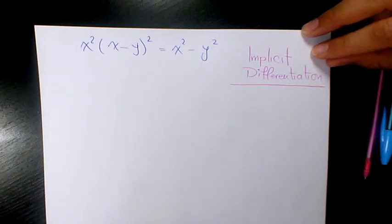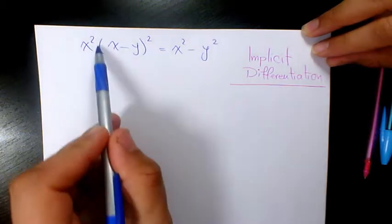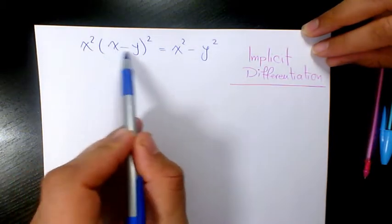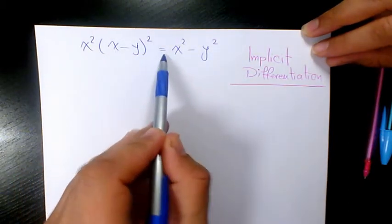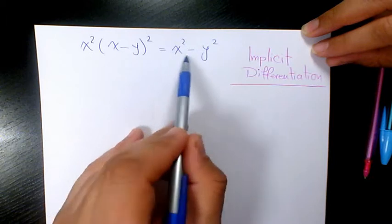What's up guys, this is Massey, welcome to another video. In this video I want to show you how to find out the derivative of x squared times x minus y to the power of 2 equals x squared minus y squared.